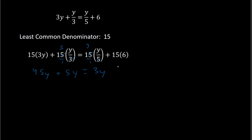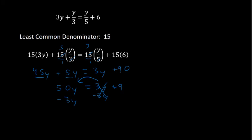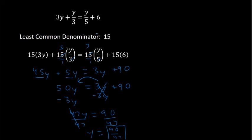And 15 times 6 gives me 90. On the left side, these can combine — we have 50y. Then we bring the y's to the same side by subtracting 3y, leaving 47y on the left and 90 on the right. Dividing by 47 gives y equals 90 over 47. And that is my solution. Notice again that multiplying by the least common denominator at this step gets rid of all the fractions.